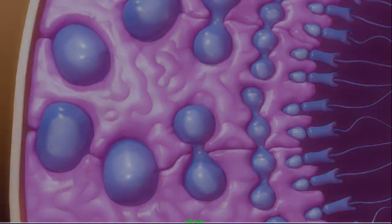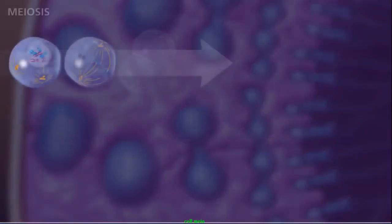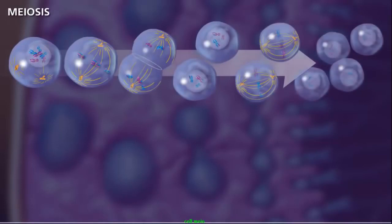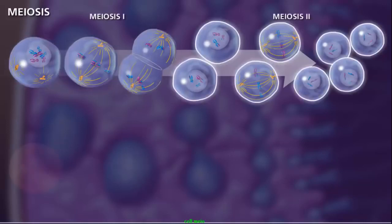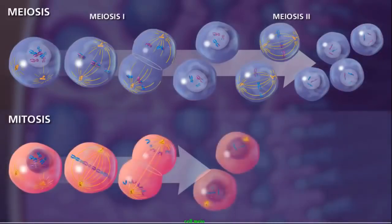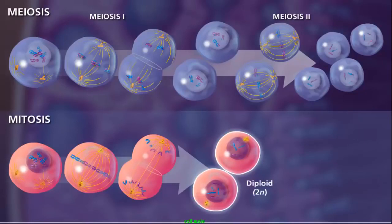Meiosis occurs in special cells called germ cells within the gonads of males and females. For the successful reduction in the number of chromosomes to occur in the new haploid daughter cells, two rounds of divisions are necessary. These divisions are termed meiosis I and meiosis II. Although the processes of mitosis and meiosis look similar, there are a few major differences. One obvious difference is that mitosis results in two diploid daughter cells, and meiosis results in four haploid cells.